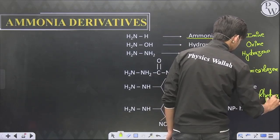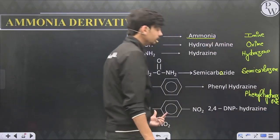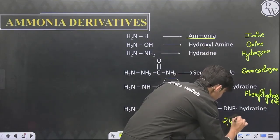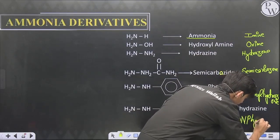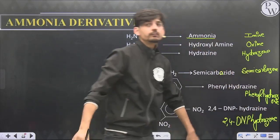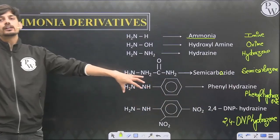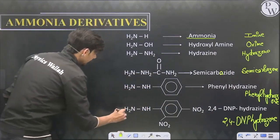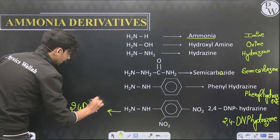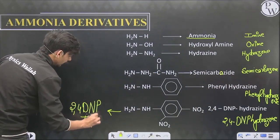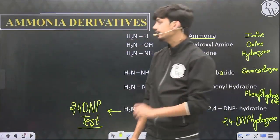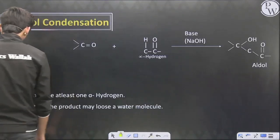In case of phenylhydrazine the product is a phenylhydrazone. For 2,4-dinitrophenylhydrazine (2,4-DNP), the product is a 2,4-dinitrophenylhydrazone. The 2,4-DNP product always gives characteristic colors, so this is used as the 2,4-DNP test for aldehydes and ketones — any compound with an aldehyde or ketone group will give a positive 2,4-DNP test.